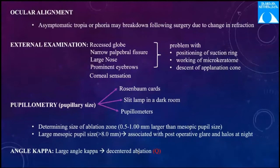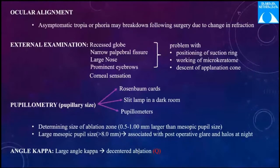For pupillometry, the pupil size can be determined with Rosenbaum cards or a pupillometer. The simplest method is using the thinnest possible slit with minimum light on the slit lamp in a dark room to measure the pupillary diameter. The ablation zone should be 0.5 to 1 millimeter larger than the mesopic pupil size. A larger mesopic pupil size of more than 8 millimeters is associated with post-operative glare and halos at night.